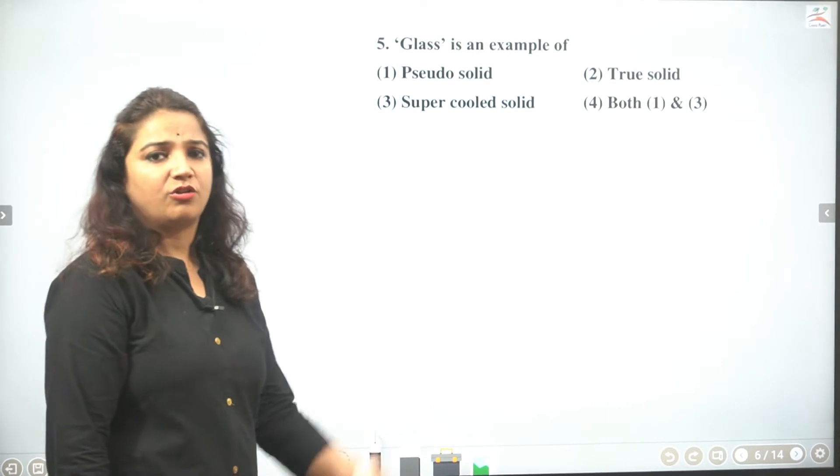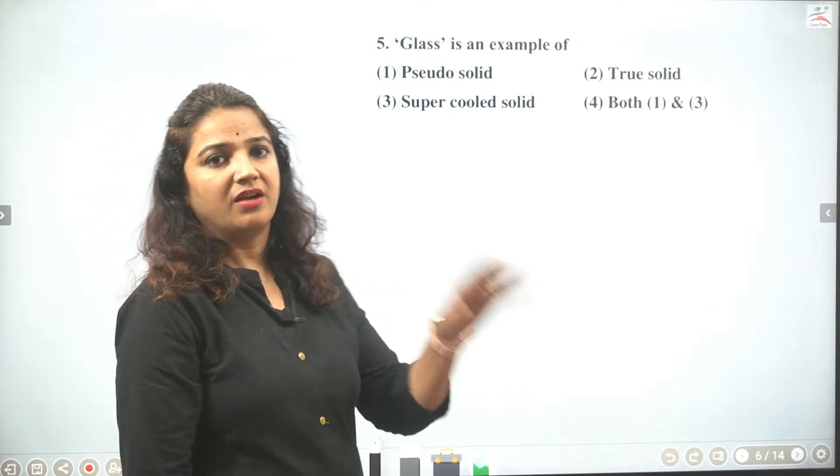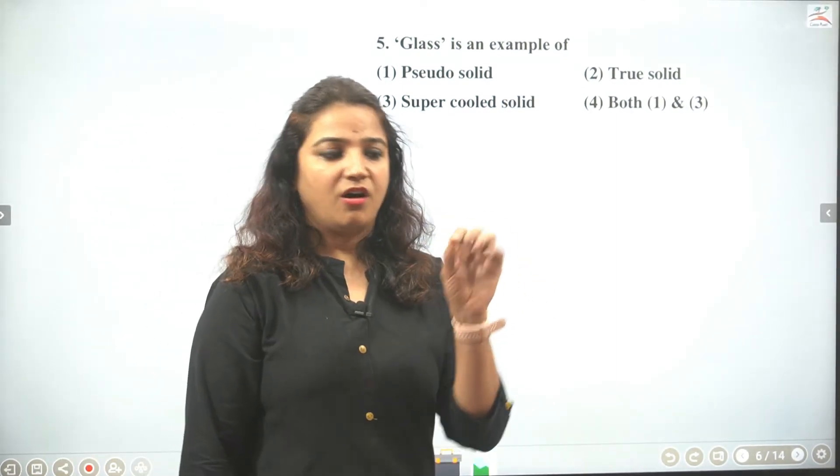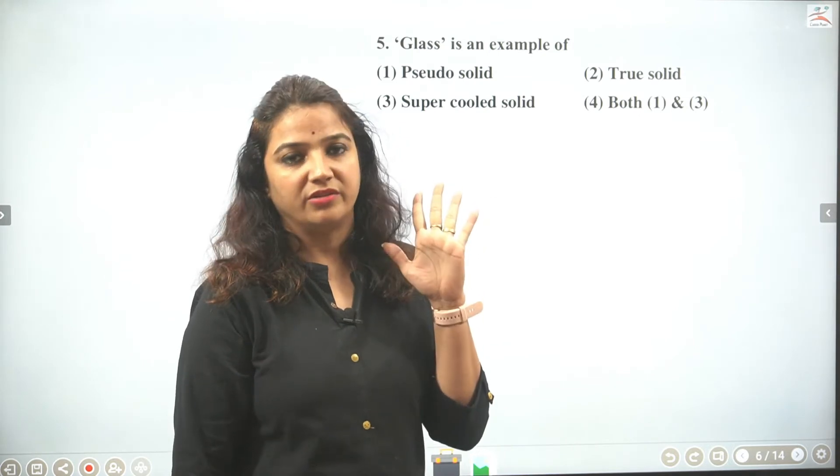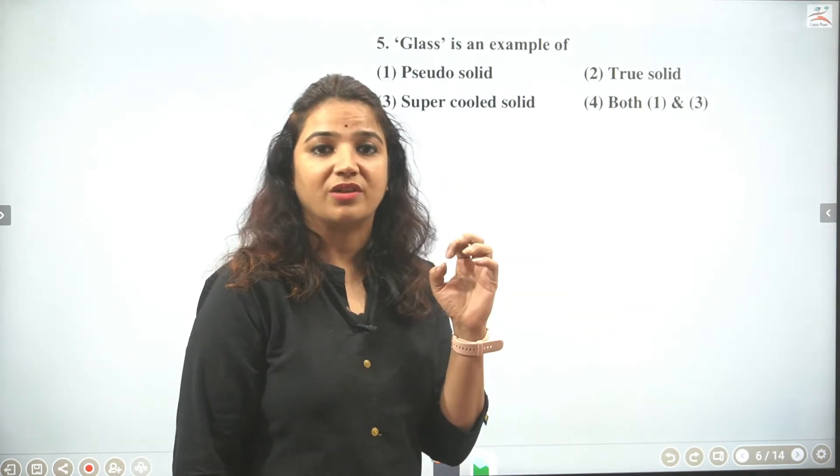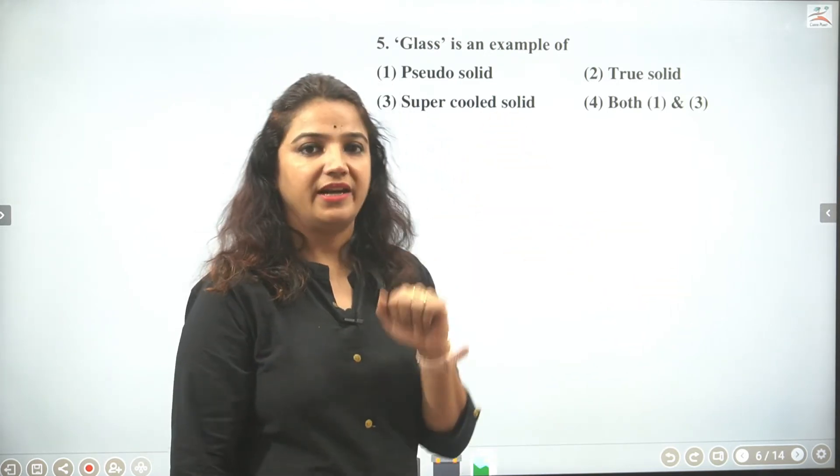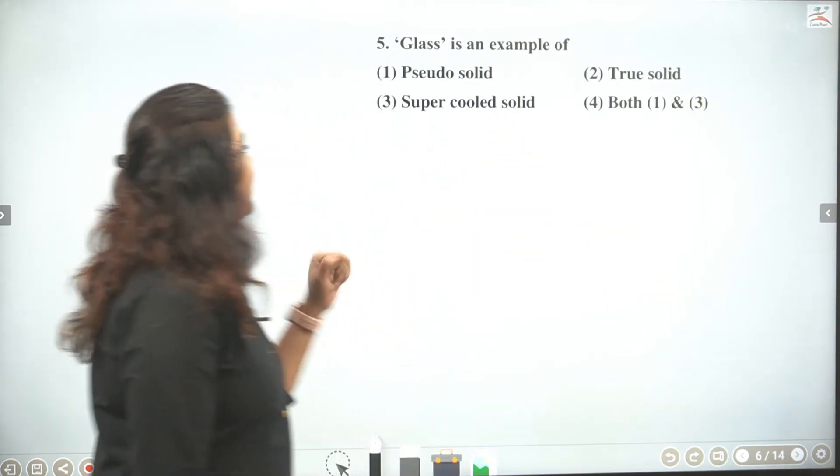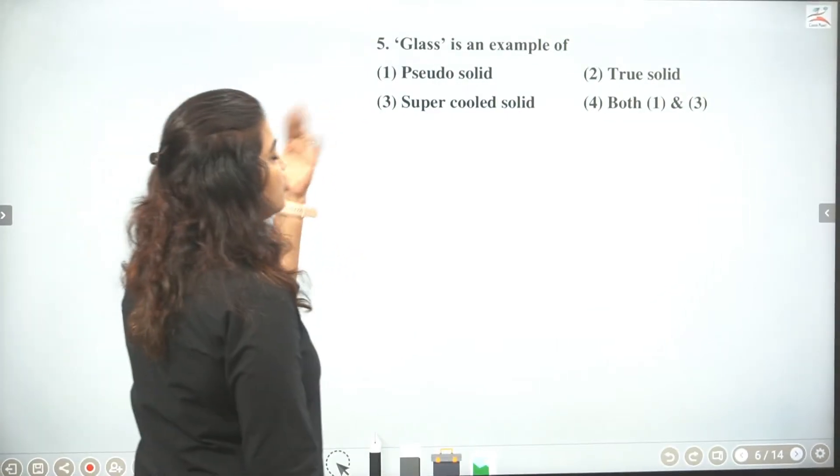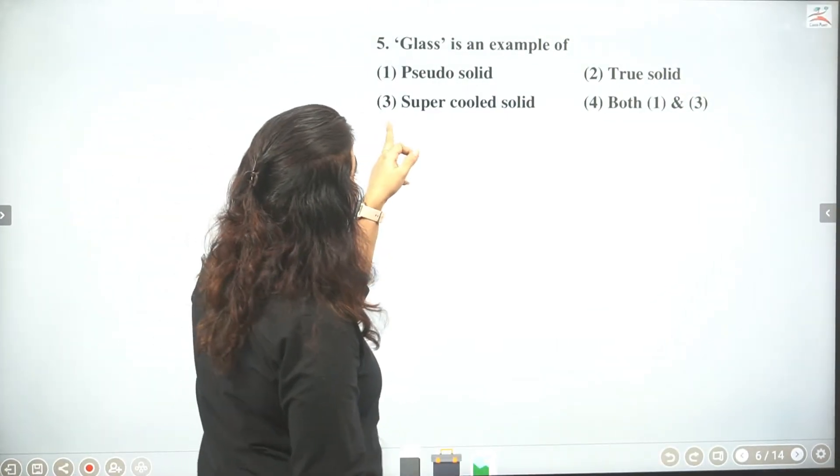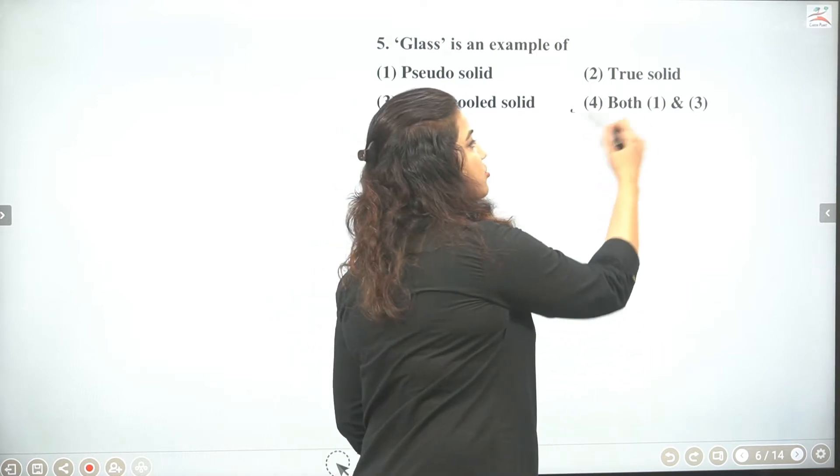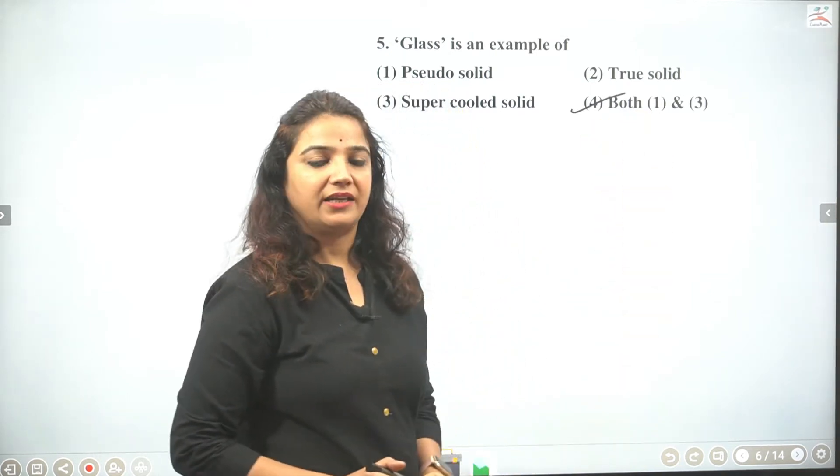H2O solid bhi hona chahiye. Then glass is an example of. Toh baccho glass kya hai. Toh humne kaha hai toh humne kaha ki glass crystal nahi hai. Toh amorphous solid hai. Toh amorphous solid ko hum true solid toh nahi kehte. True solid toh crystal hota hai. Hum kehte pseudo solid ya phir super cooled liquid. Kyunki ismein flow karne ki tendency hoti hai. Toh yeh glass kya hai. Toh hum kahenge pseudo solid bhi thik hai. Super cooled liquid bhi thik hai. Matlab aapka answer jo hoga that will be one and three both.